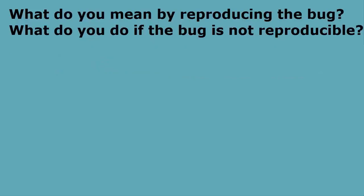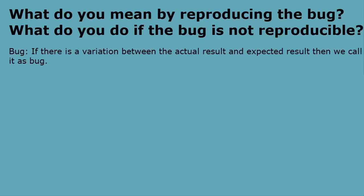What do you mean by reproducing the bug, and what do you do if the bug is not reproducible? First, let's see what is a bug or defect. If there is a variation between the actual result and expected result, then we call it a bug. We have posted a video on the difference between bug, defect, failure, and error — check it out to get more information.